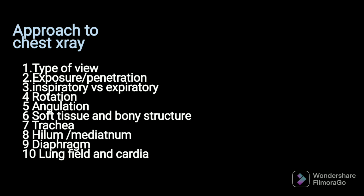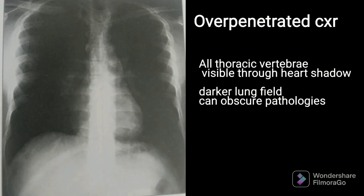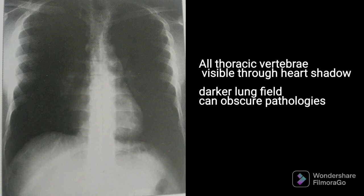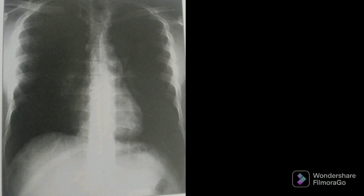We will start first with an over-penetrated chest x-ray. This is how an over-penetrated chest x-ray looks. We have two features: the first is that all thoracic vertebrae are going to be visible through the heart shadow — even the bony details are visible. The second is that because of a darker lung field, there can be obscuration of certain pathologies.